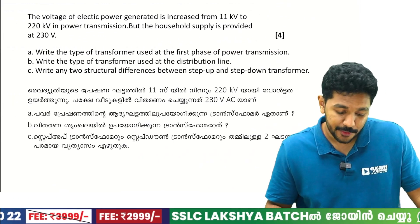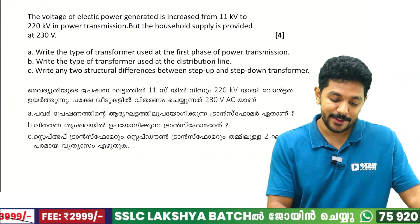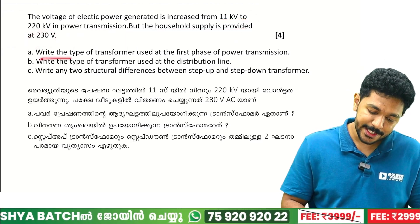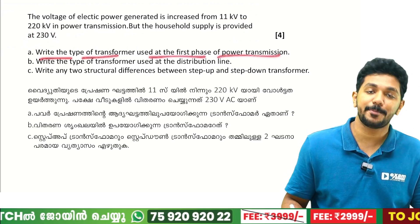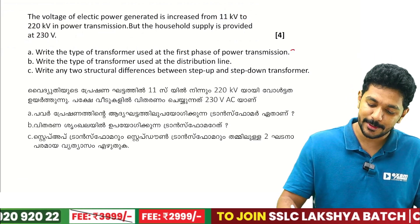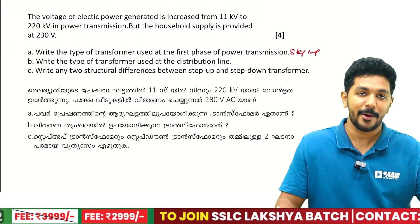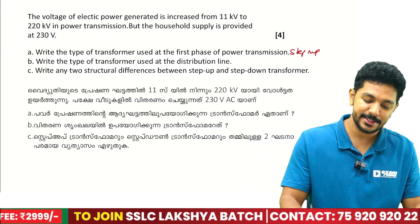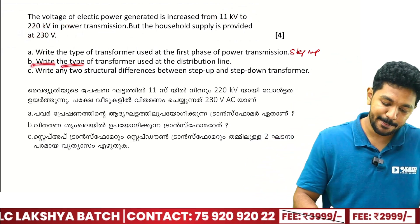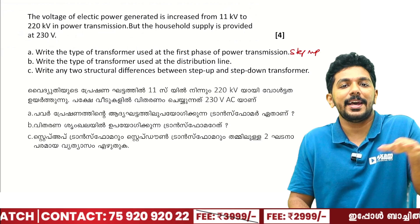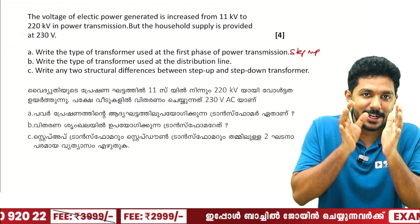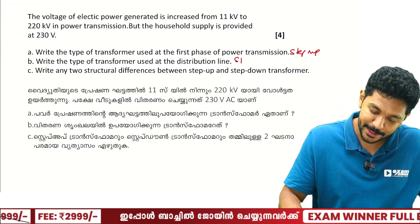The voltage of electric power generated is increased from 11 kV to 200 kV for power transmission, but the household supply is at 220-250 volts. The type of transformer used in the first phase of power transmission — to step up the voltage from 11 kV to 200 kV — is a step-up transformer. For the distribution line, where voltage is reduced to household level, a step-down transformer is used.